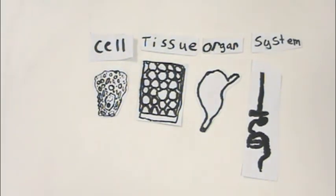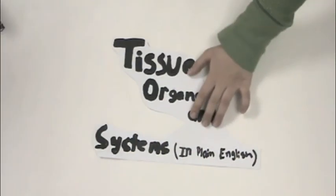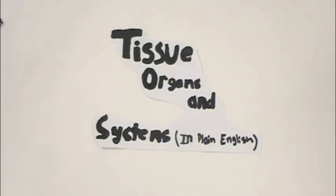Tissues that work together form an organ. Organs that work together form a system. Thanks for listening. This is systems, organs, and tissues in plain English.